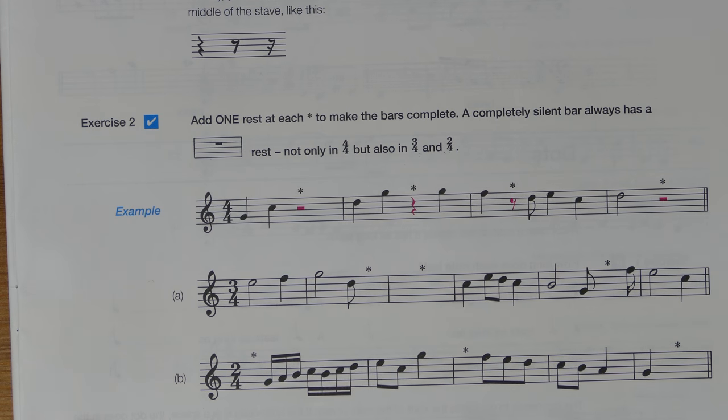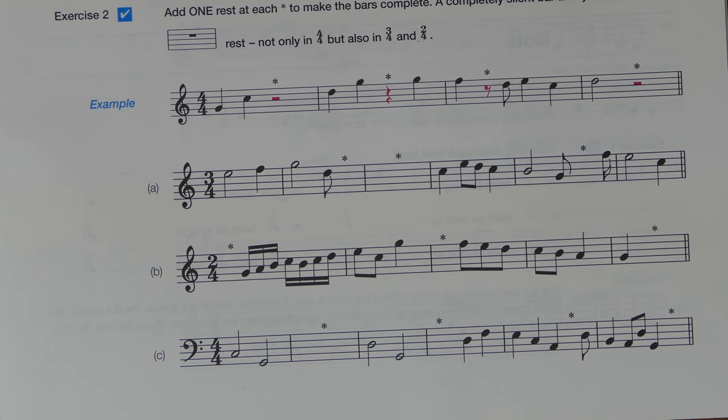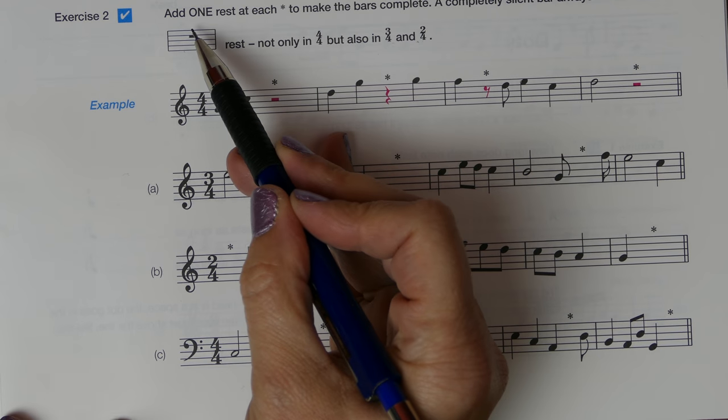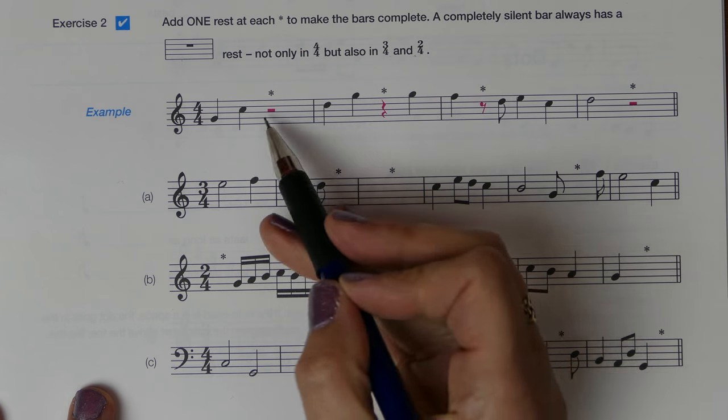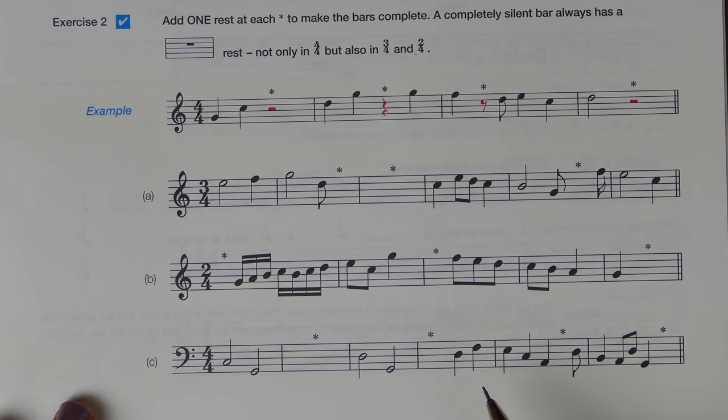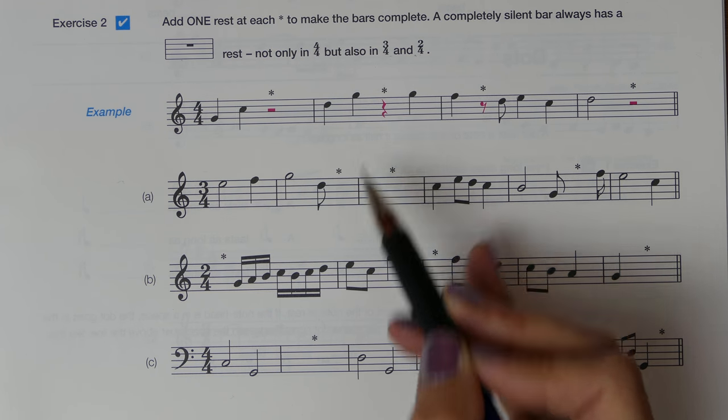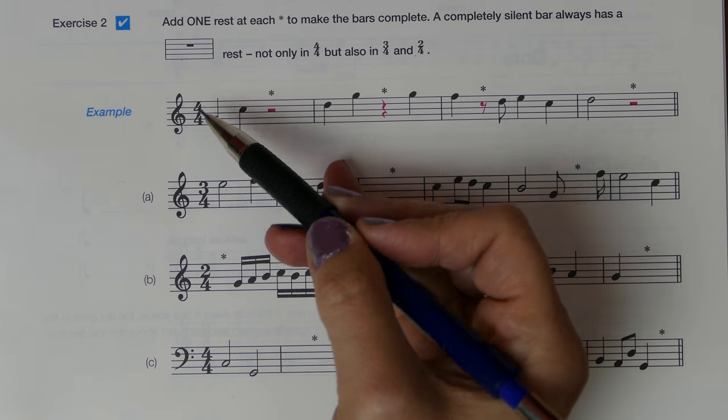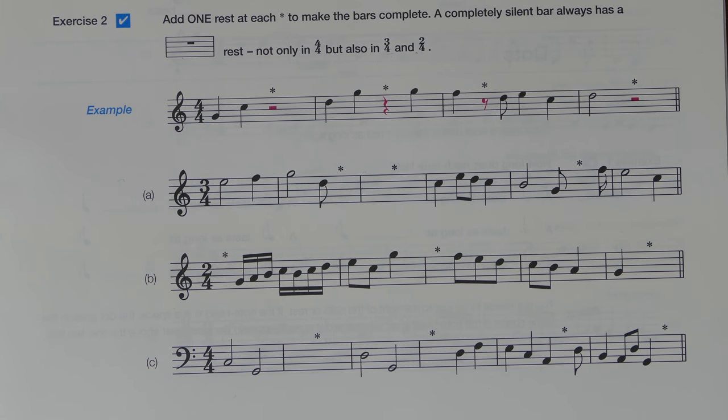In exercise two, the question asks us to add a single rest, one rest, in each of the bars wherever there's an asterisk to show there's a gap. It's asking us to complete the bar, not with a note this time like we have done in previous exercises, but this time using a single rest to complete the bar. So you need to be aware of what your time signature is, and then perhaps refer back to sheet G where I've shown you your rest values so you can get your maths going to complete these bars.